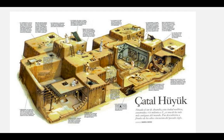Permanent settlements led to the development of towns and greater food production. One of the first known cities or towns was Çatalhöyük, which is in modern-day Turkey. It would have kind of looked like this in how they constructed it. Their structures didn't have doors — they had ladders that led to the roof, and there were holes in the ceilings that led down into their homes. There is a page in the textbook you could look at that covers this in more detail.